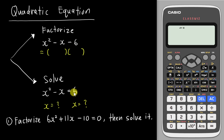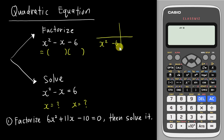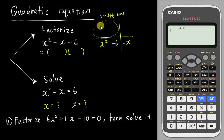We have a lot of different methods of factorizing. One of the most common way is you draw a cross like this. The first term, which is x squared, goes here. The last term, which is the constant number, goes here. And then the middle term goes over here. This is the multiply zone.